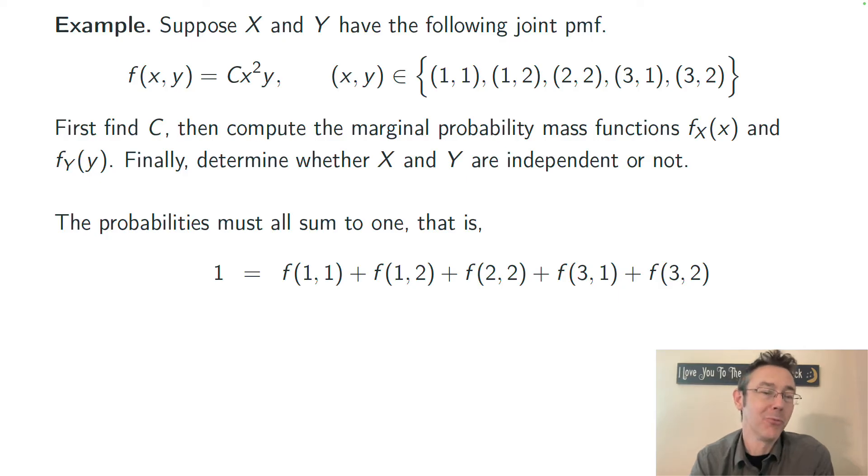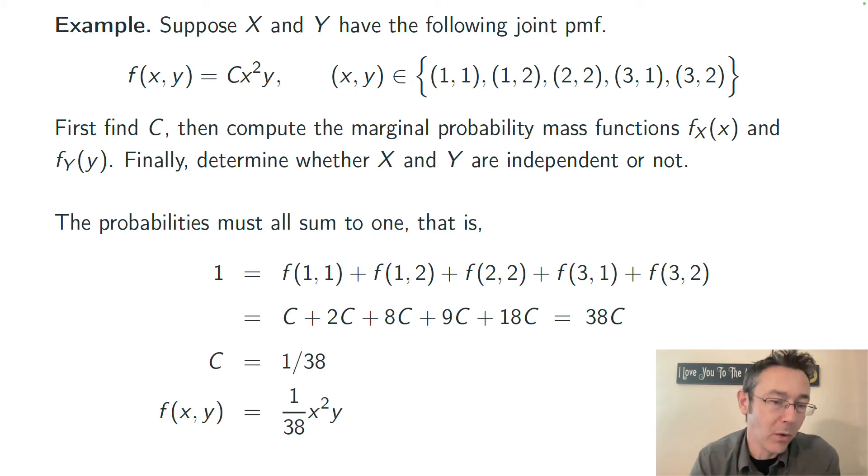So f(1,1), f(1,2), and so on. I'm just going to plug in and get this. For instance, when x is 1 and y is 1, I get c times x squared y, c times 1, or just c. When I do that for all five of these combinations of variable values, I get 38c. So 38c has to equal 1, c equals 1/38, and the probability mass function is 1/38 times x squared y.